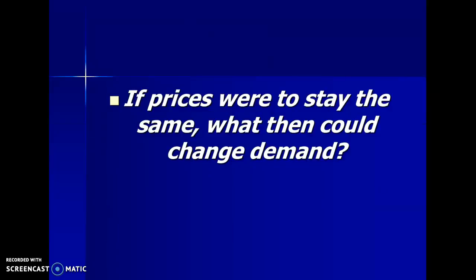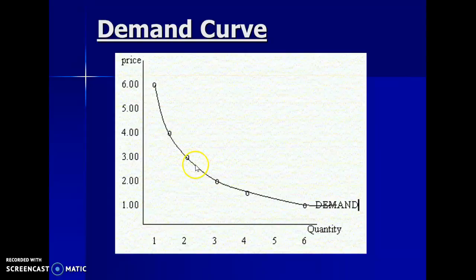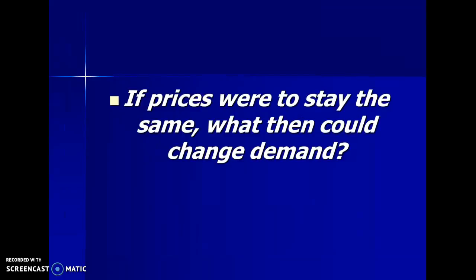But if prices were to stay the same, what then could change demand? If price changes, you're going to move along the demand curve, either up or down. If the price goes down from $3 to $2, the change in quantity demanded is shown by a movement along the demand curve. But there are things that can change demand that don't necessarily involve a change in that particular good's price.